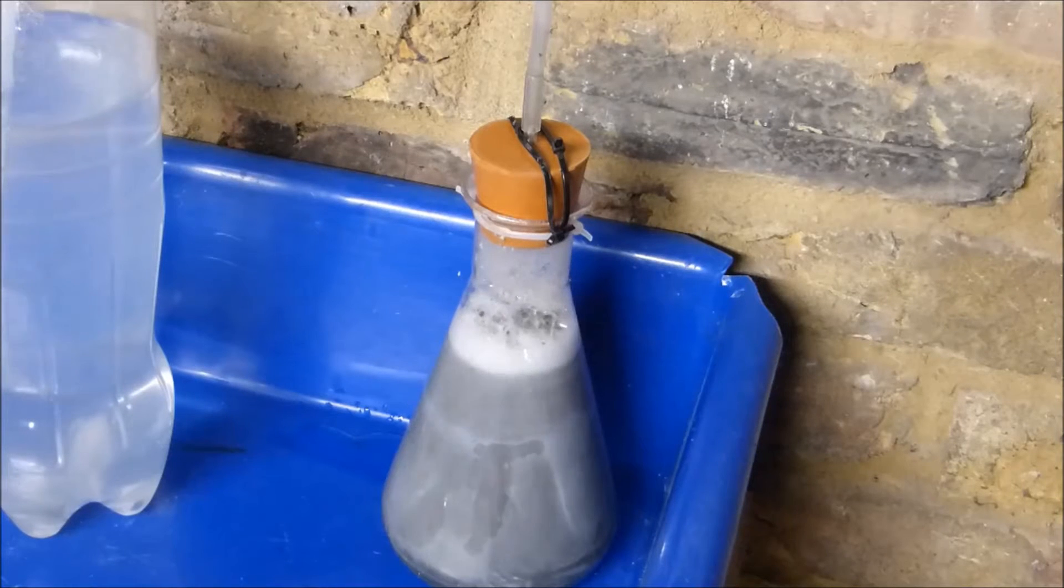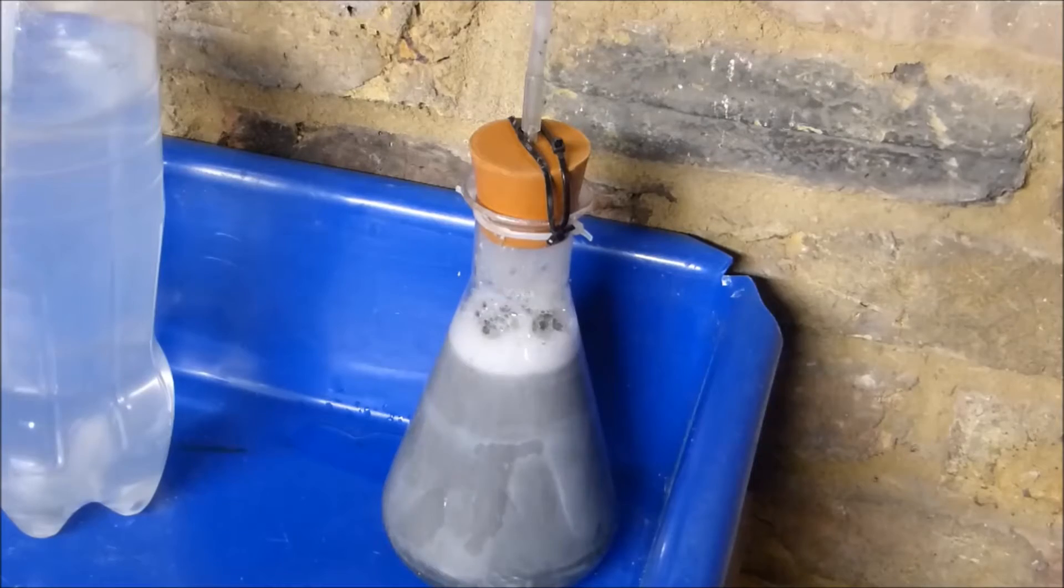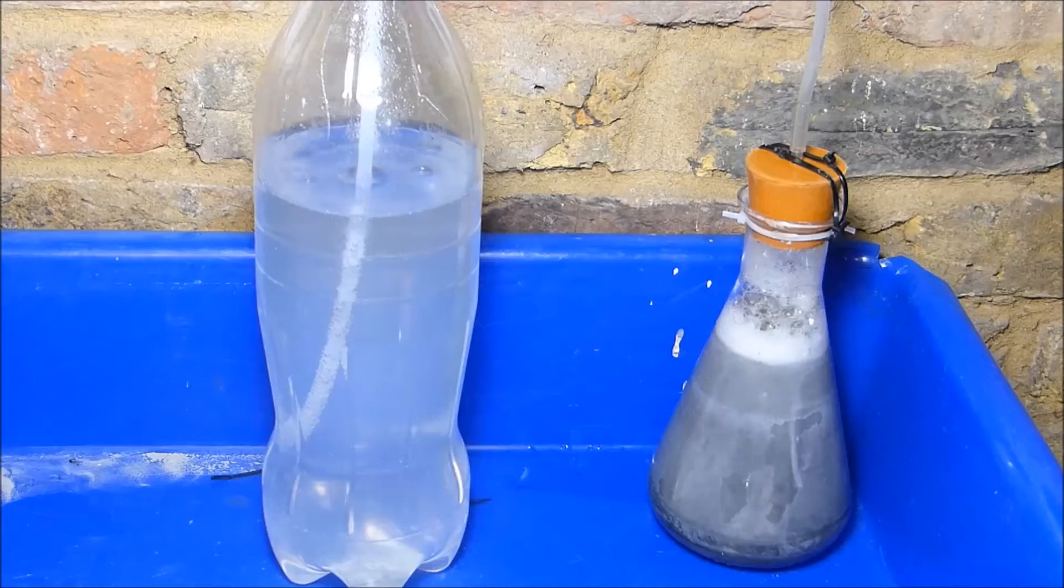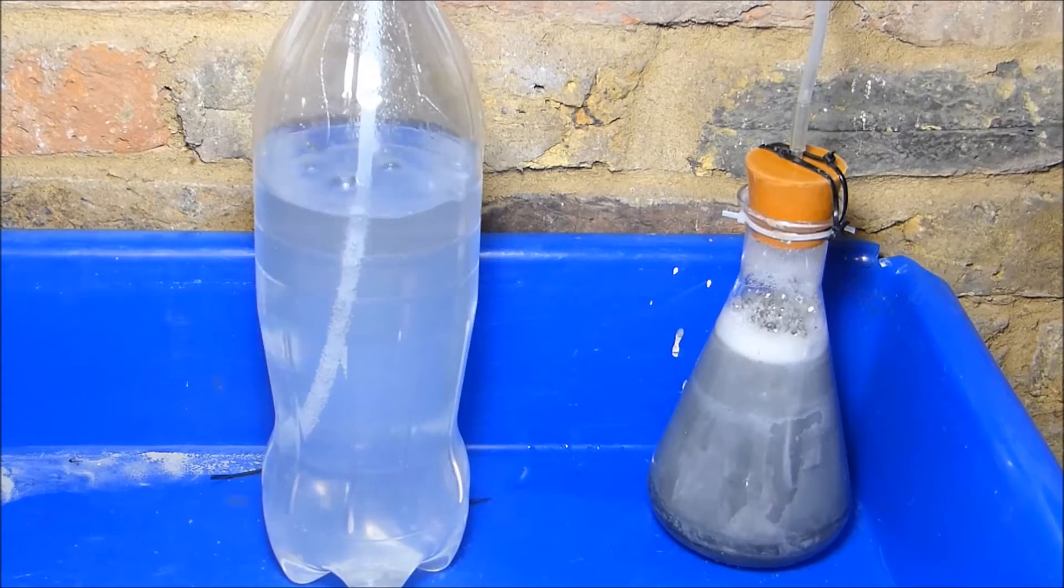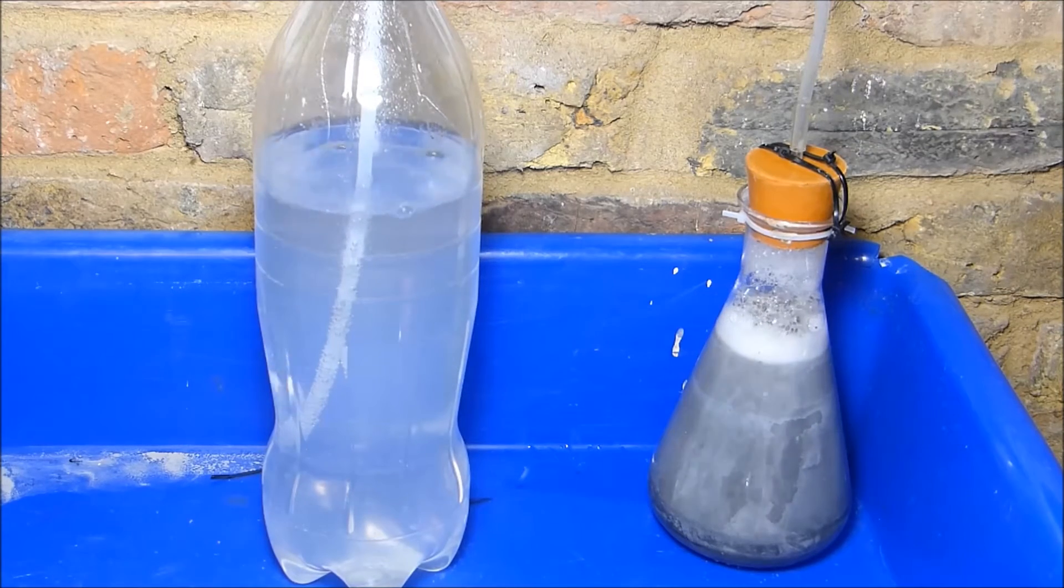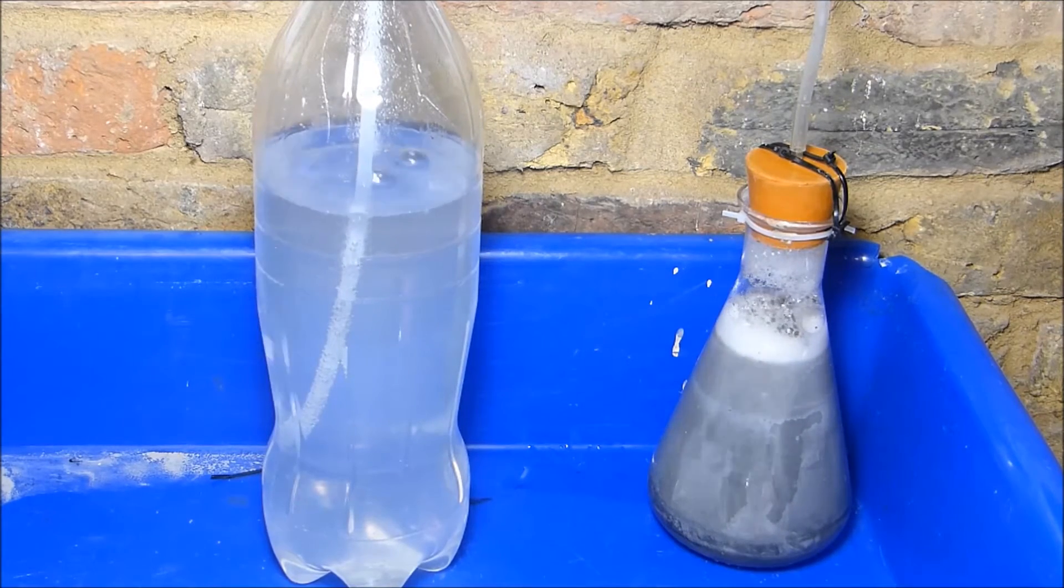The hydrogen is created in the flask and it's an exothermic reaction so it heats up rapidly. This creates water vapor which can carry traces of the sodium hydroxide. To remove as much of this as possible we pass the gas through a bubbler which is the soda bottle filled with water.